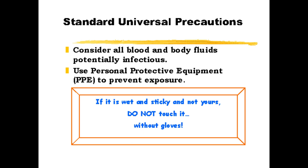Now let's talk about standard universal precautions in phlebotomy — essential practices in healthcare to prevent the spread of infection. Treat all blood and body fluids as potentially infectious; assume that every patient's bodily fluids could carry infectious agents even if there are no visible symptoms. Always use PPE — wear gloves, masks, gowns, or goggles as needed to protect yourself from exposure to blood-borne pathogens. Remember the golden rule: if it is wet, sticky, and not yours, do not touch it without gloves. By consistently applying these precautions, you protect yourself, your patients, and others in healthcare environments.